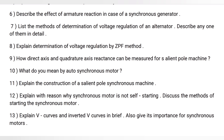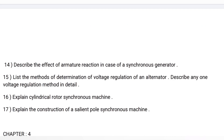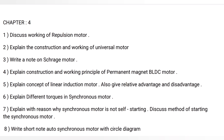Question 11: Explain the construction of a salient pole synchronous machine. Question 12: Explain with reason why a synchronous motor is not self-starting; discuss the methods of starting the synchronous motor. Question 13: Explain V-curves and inverted V-curves in brief; also give their importance for synchronous motors. Question 14: Describe the effect of armature reaction in the case of a synchronous generator. Question 15: List the methods of determination of voltage regulation of an alternator; describe any one method in detail. Question 16: Explain cylindrical rotor synchronous machine. Question 17: Explain the construction of a salient pole synchronous machine.